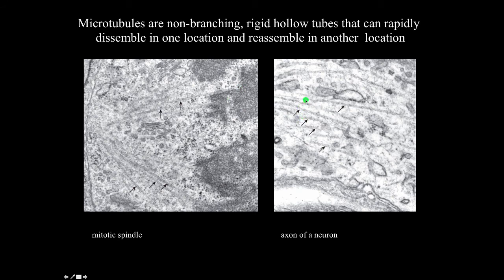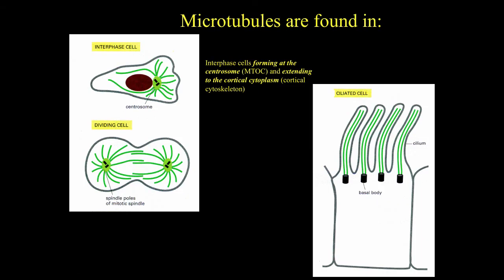Microtubules are shown here in the axon of a neuron. Microtubules can also be found in interphase cells, where they originate at the centrosome and radiate out towards the cortical cytoskeleton, as shown in this cartoon.